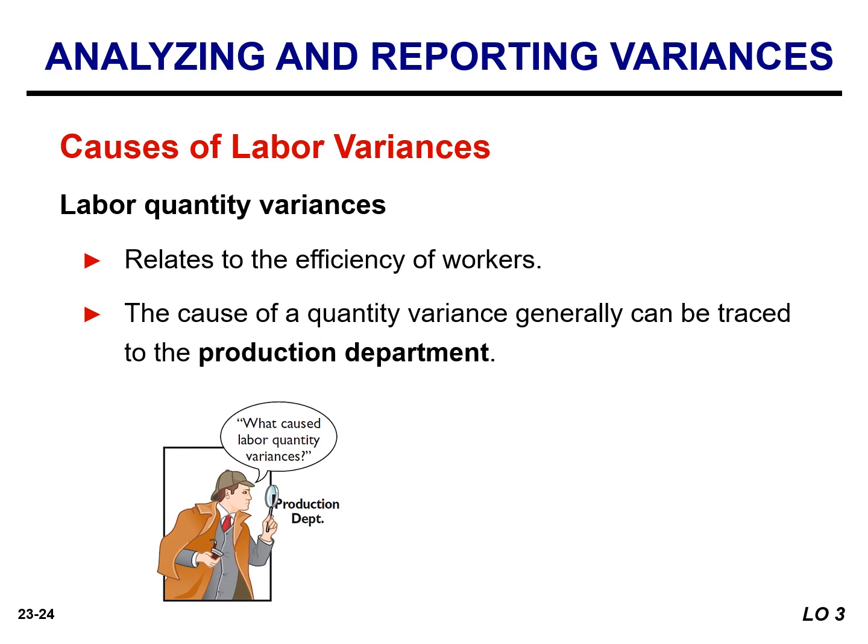Labor quantity variances relate to the efficiency of workers, and the cause can generally be traced to the production department. The cause of an unfavorable variance may be poor training, worker fatigue, faulty machinery, or carelessness — all of which are the responsibility of the production department. If however the excess time is due to inferior materials, the responsibility falls outside of the production department.